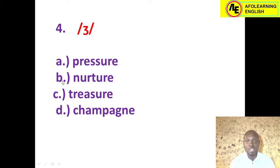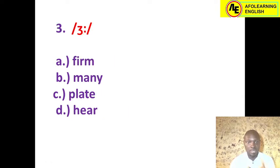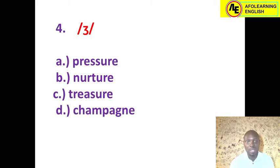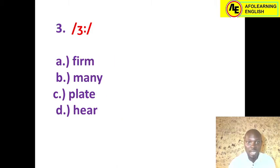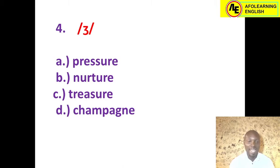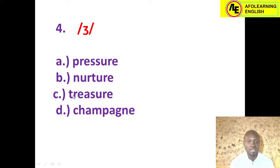Number four: this is a consonant sound /ʒ/. Students should not confuse it with the vowel sound /ɜː/ we just discussed — they are absolutely different. The /ʒ/ is a consonant. Looking at the options: 'pressure' — no; 'nurture' — no; 'treasure' — yes, this is absolutely the correct answer, the letters 'sure' here reflect the /ʒ/ sound; 'champagne' — not the answer. The correct answer is option C: treasure.